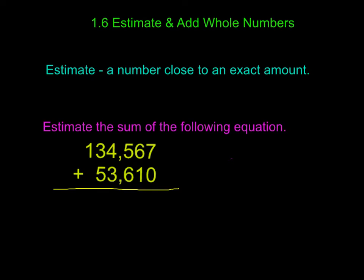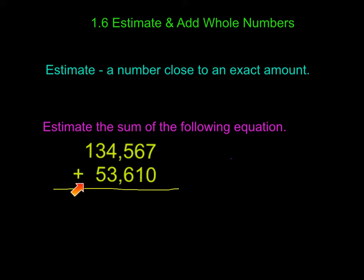As you can see down here below, we have a problem and it says estimate the sum of the following equation. So we have 134,567 plus 53,610. Now because we are estimating, we're not just going to add these straight across right now. We want a number that is about what the answer is going to be.